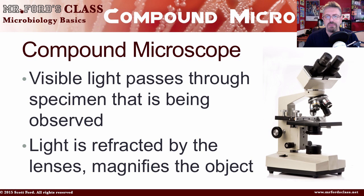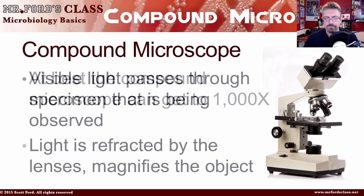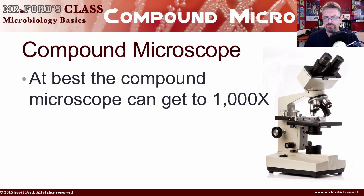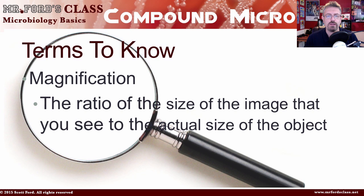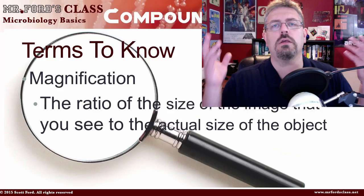In the compound microscope, visible light passes through the specimen — that's the thing you're observing, such as bacteria, a scraping of teeth, protozoa, or whatever you have on the slide. The light is refracted by the lens, which magnifies the object. At best, the compound microscope can get to about 1,000x magnification. Magnification is defined as the ratio of the size of the image you see to the actual size of the object.